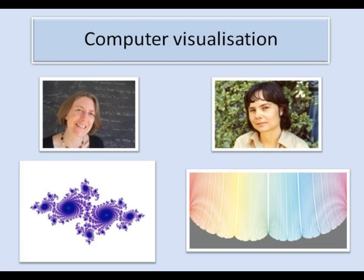For example Gwyneth Stallard works with Julia sets in complex analysis such as the one on the left and Caroline Series has studied the Maskit embedding in group theory which gives rise to the picture on the right. Mathematicians have also used computers to test conjectures and to examine examples which suggest ideas for theorems which can be investigated and sometimes proved by hand.